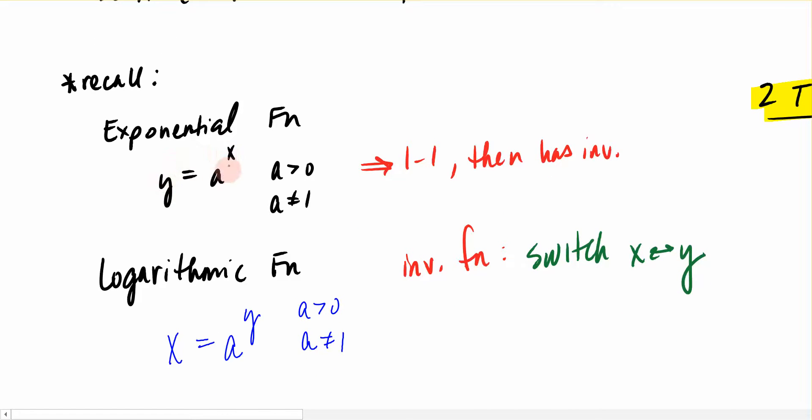So if my exponential function is the one I want to find the inverse of, then I switch the x's and the y's to create the logarithmic function, x equals base a to the y. Notice that both of these functions still keep the same requirement here that base a must be greater than zero and not equal to one for both of these things to happen.